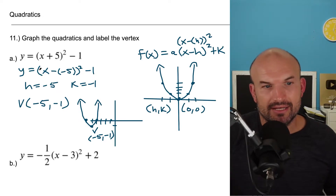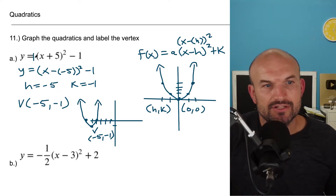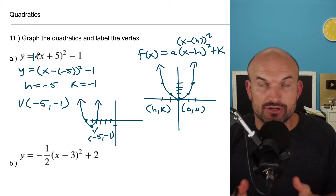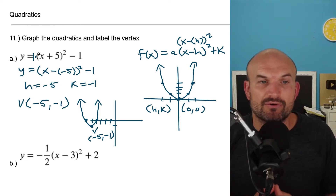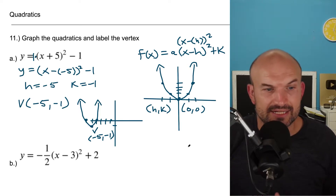Also, the graph is going to be opening up because my a is a positive one. So therefore there's no stretch or compression, but the graph is going to be opening up because it's positive.